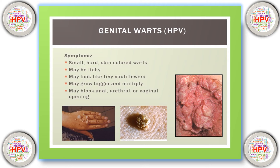Regarding the symptoms of genital warts infection: outgrowths are formed that are small in size, hard in nature, and skin-colored. Another symptom is itching. The warts look like tiny cauliflowers and they grow bigger and multiply. These warts may block the anal region, urethral region, or vaginal opening. Sometimes there will be a discharge from the vagina or penis. These are the symptoms experienced by the infected person.